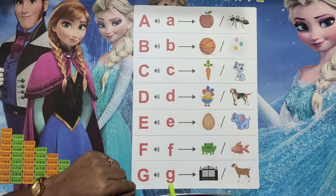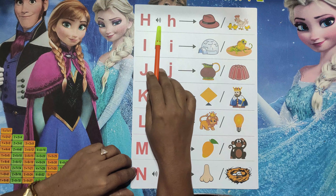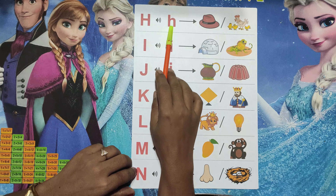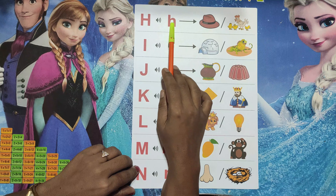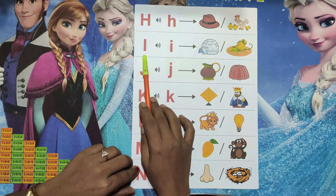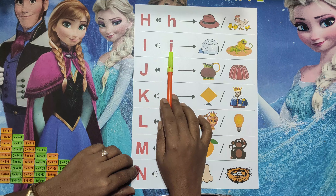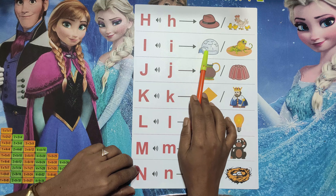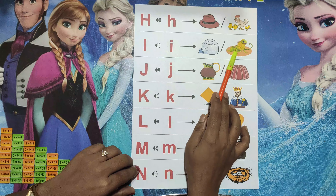E sound as 'e' — elephant. F sound as 'f' — frog, fish. G sound as 'g' — gold. H sound as 'h' — hen. I sound as 'e' — iguana.